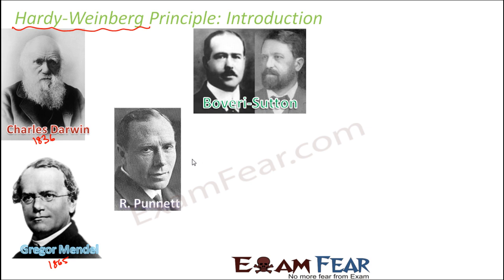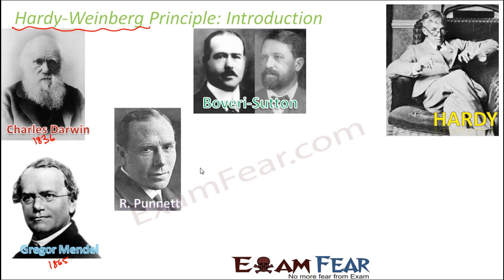Meanwhile, this was all connected to Punnett because Punnett and Hardy were good friends. Hardy was a mathematician, so he had good knowledge of numbers. As we all know, genetics has a lot to do with mathematics and statistics. So Hardy actually helped Punnett in trying to understand why recessive traits exist over time.